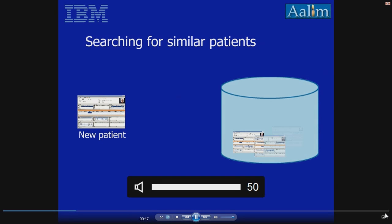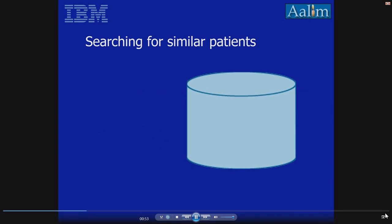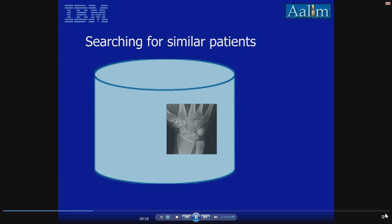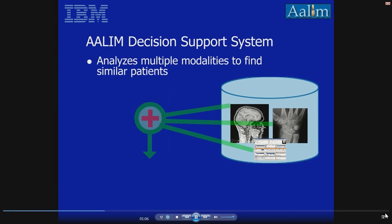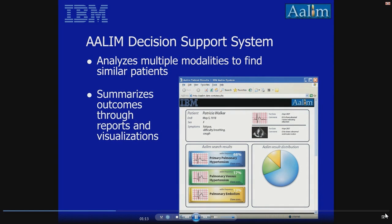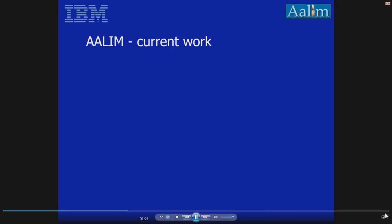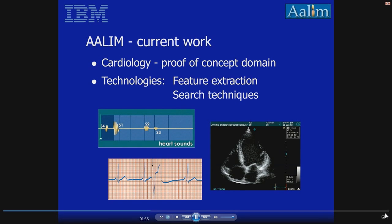The key to statistical decision support is finding similar patients based on their electronic health records. Health records today have become multimodal, including images, video, text, and charts. ALUM is a decision support system that analyzes multiple modalities to identify similar patient records. ALUM then summarizes similar patient outcomes through easy-to-read reports and visualizations. Current work in ALUM has focused on cardiology, with sophisticated feature extraction and search techniques to find similar patients based on analysis of their heart sounds, EKGs, and echocardiogram videos.